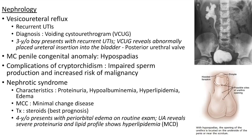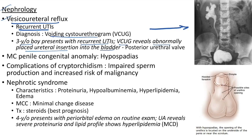Vesicoureteral reflux: recurrent urinary tract infections. Diagnosed using voiding cystourethrogram (VCUG) — shows retrograde flow of urine. Case: 3-year-old boy with recurrent UTIs; VCUG reveals abnormally placed ureteral insertion into the bladder (posterior urethral valve).